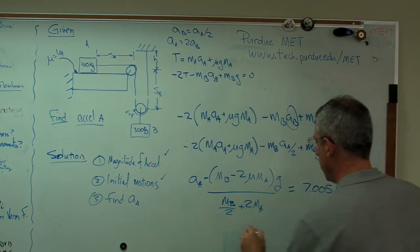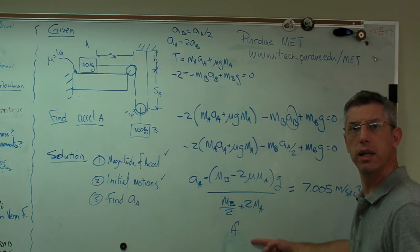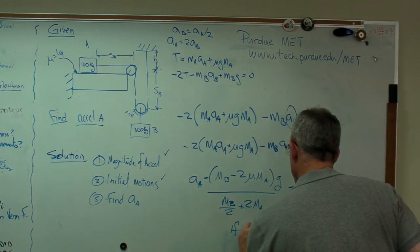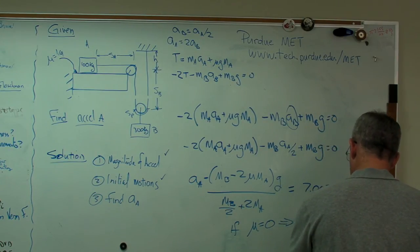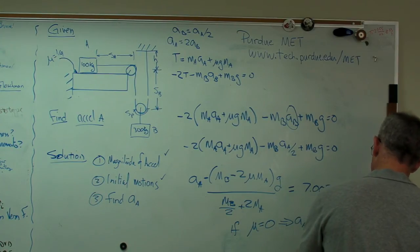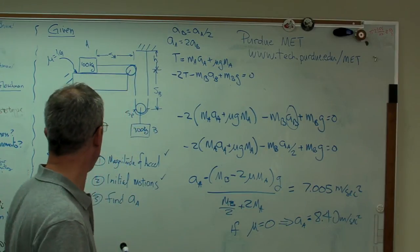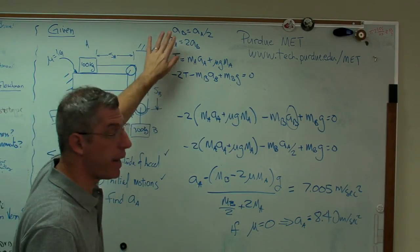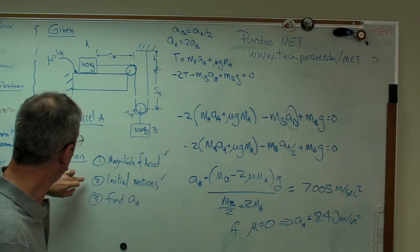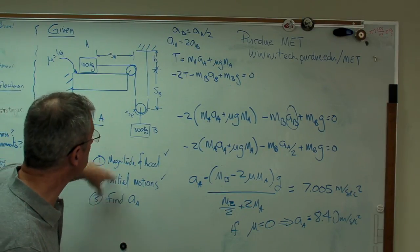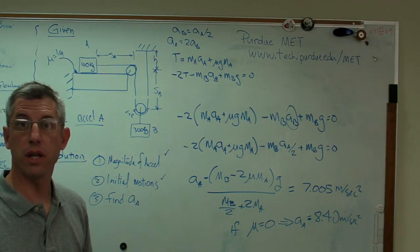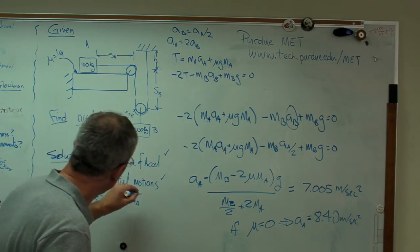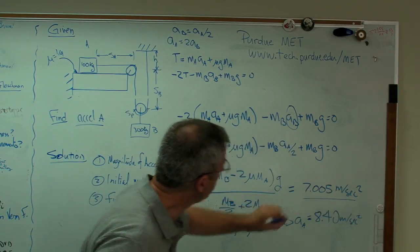And what you get when you solve this is 7.005 meters per second squared. Also, if mu equals zero, then AA equals 8.40 meters per second squared. So there you go. We did this in three steps. We found the magnitudes of the acceleration, magnitudes, there's no directions up there. We looked for initial motions using a static analysis to establish the directions of motion. And then once we did that, we found AA using dynamic equilibrium analysis. So there you go. And there's your answer.